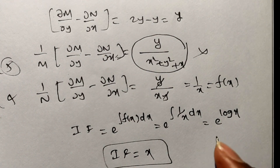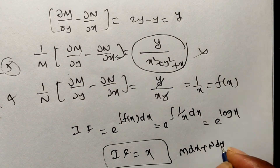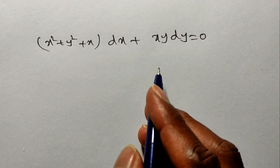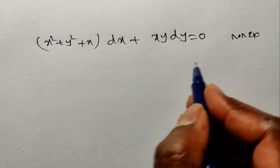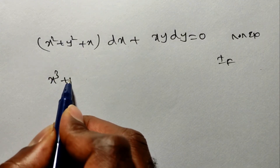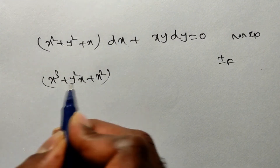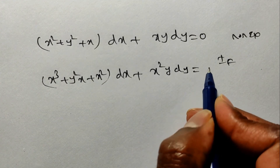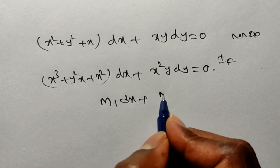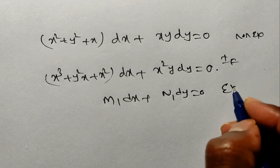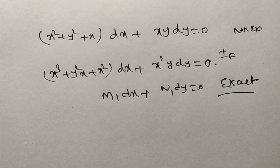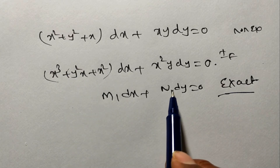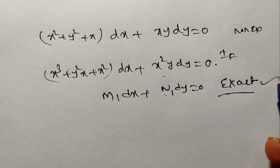Multiply the integrating factor x by the given differential equation M dx + N dy = 0, which was non-exact. You get (x³ + y²x + x²) dx + x²y dy = 0. This is now M₁ dx + N₁ dy = 0, an exact differential equation. You can verify: differentiating M₁ with respect to y gives 2xy, and differentiating N₁ = x²y with respect to x also gives 2xy. So yes, it is exact.